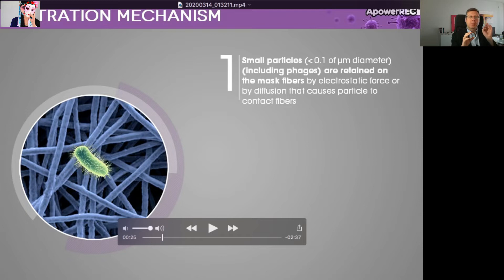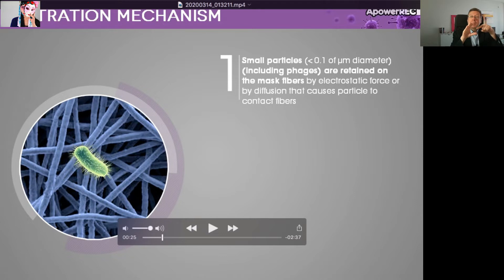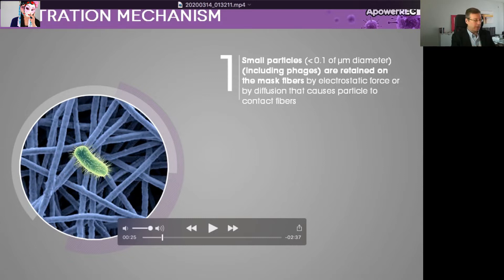Also, very small particles are doing what are called Brownian moves, which is random moves in the air. As they are passing through, although they are going to go through the empty space of the media, due to these random moves they will hit the filter fibers and they will be filtered out. So very small particles will be filtered out by these two filtration mechanisms.